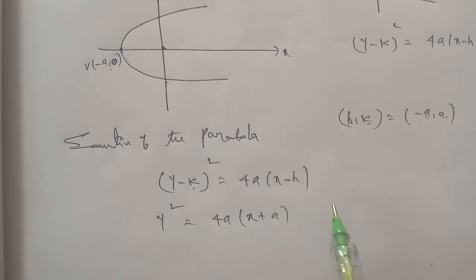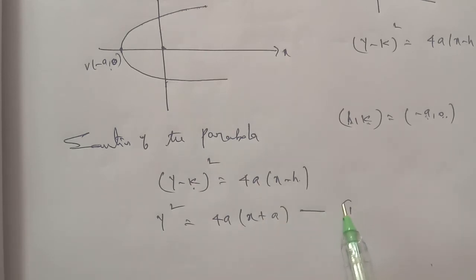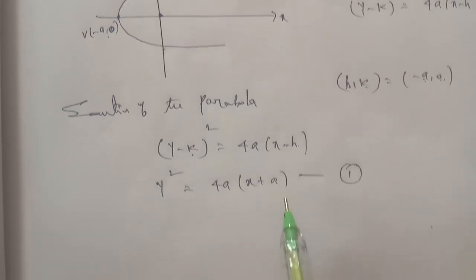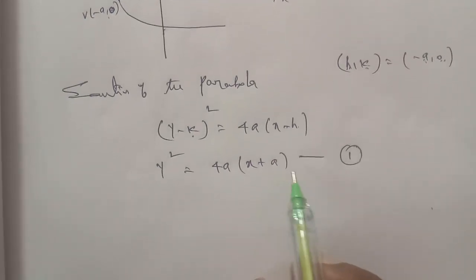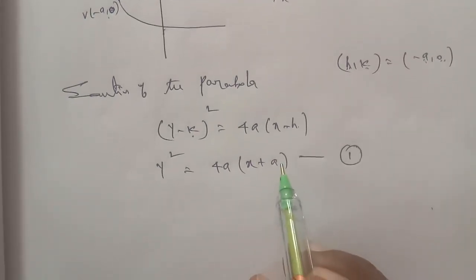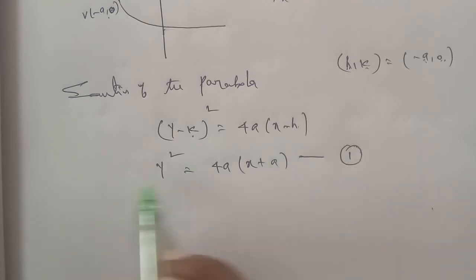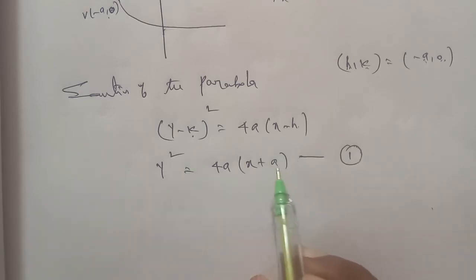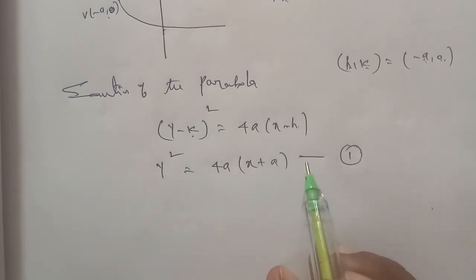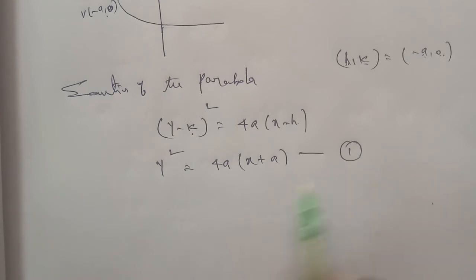In this equation, there is just one arbitrary constant, a. Since there is only one variable constant, we differentiate just one time to find the differential equation.